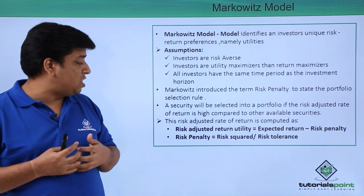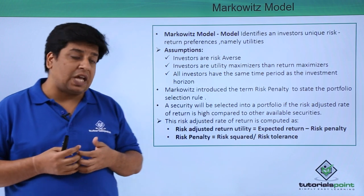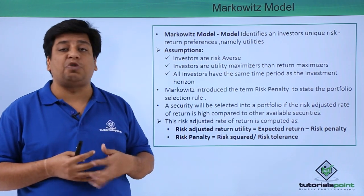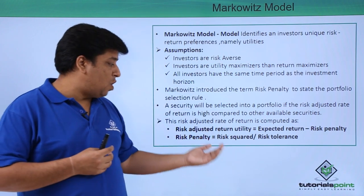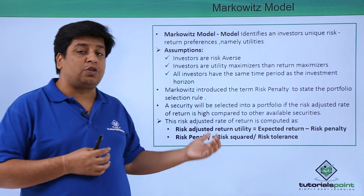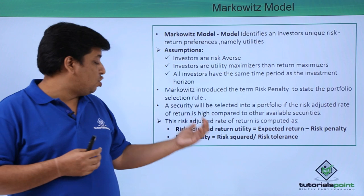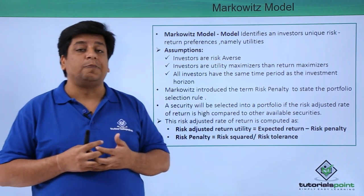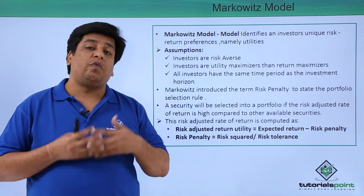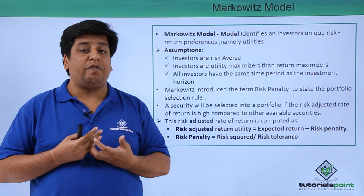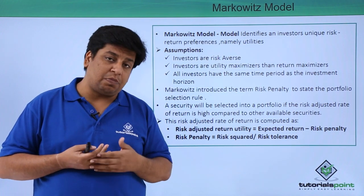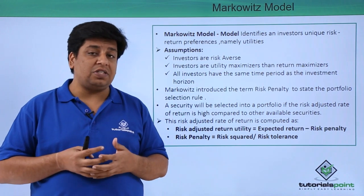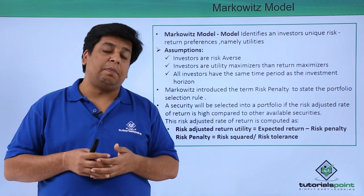So, risk-adjusted return utility equals expected return minus risk penalty. Risk penalty is calculated as risk squared — which is the variance — divided by risk tolerance. If you know the variance of a particular stock, you can calculate its risk penalty and then derive your risk-adjusted return utility. This is the core concept Markowitz introduced: constructing a portfolio by considering not only the returns of various asset classes but also the resulting risk, allowing you to design a portfolio aligned with your objective.